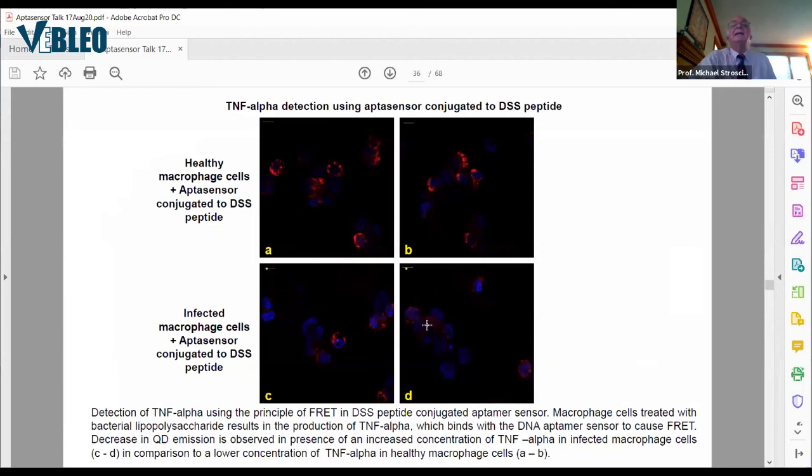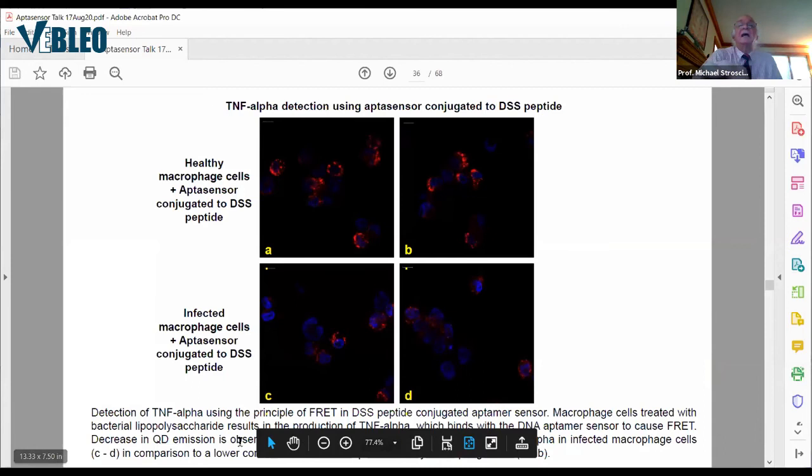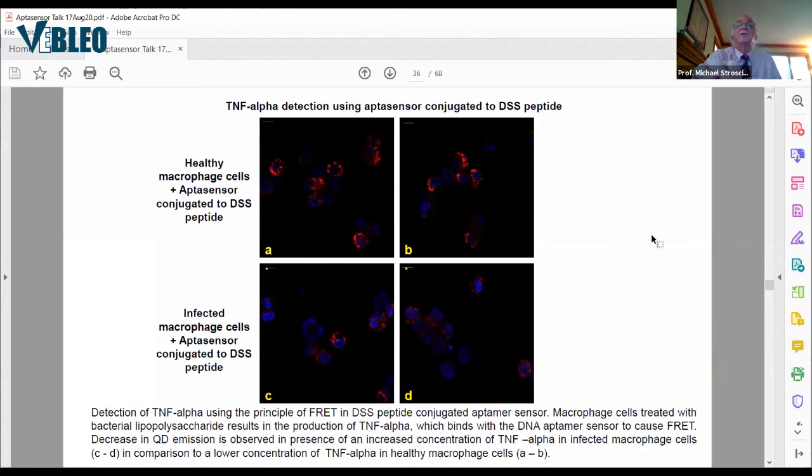Another example, this is detecting TNF alpha. Again, with the TAT peptide, and this is for healthy cells. This is for infected cells. Infected cells have elevated levels of TNF alpha, and you see there's less fluorescence from the quantum dots in the case of the infected cells, which produce the TNF alpha. What's happening is that the aptamers are binding to the TNF alpha in the cells.